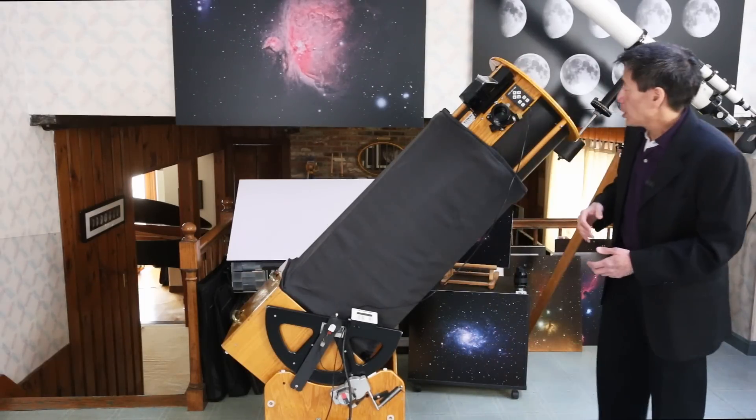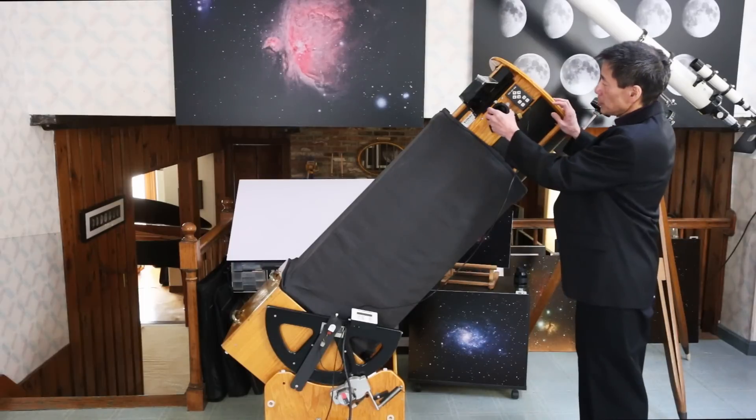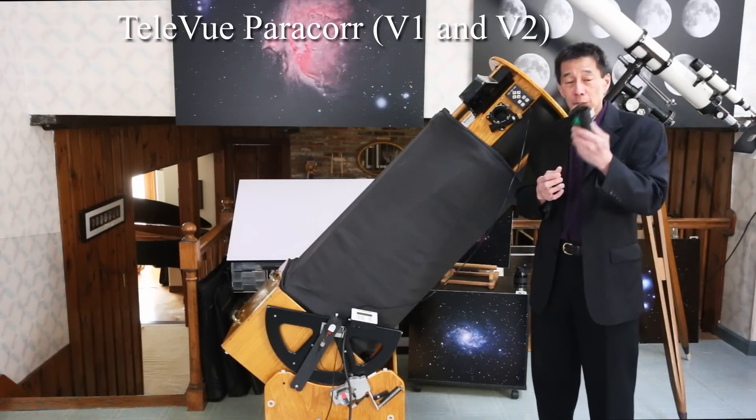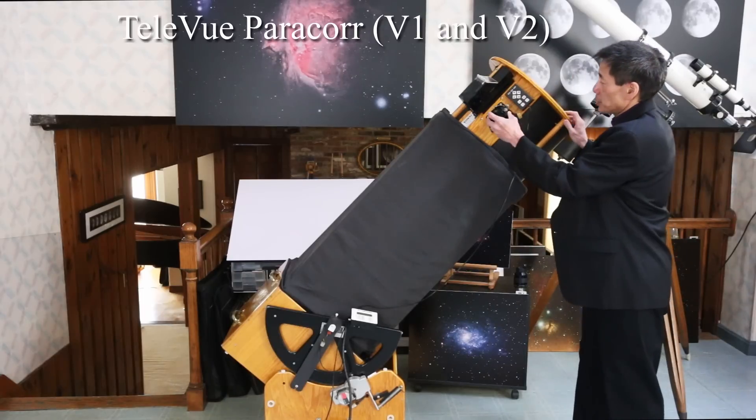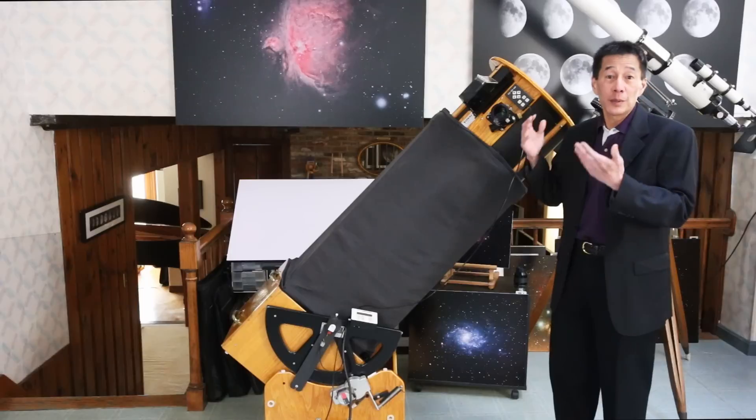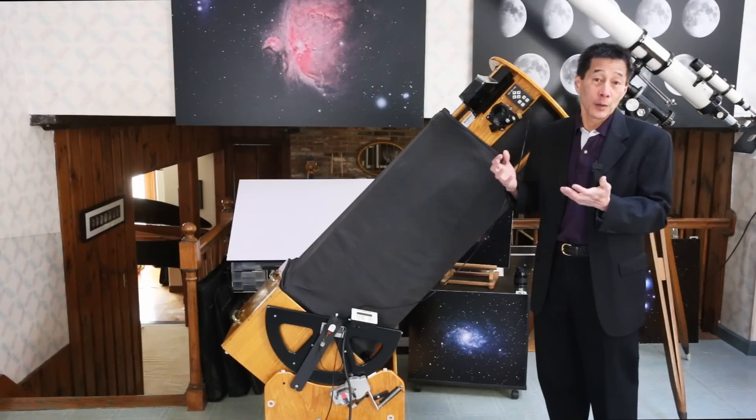But there's a fix that we have, and it's called a paracore, and this is made by Tele Vue. It looks kind of like an eyepiece. There's been a couple of different versions of this, but it slips right in the focuser here, and there's a lens element in there that corrects for these edge aberrations, and it works very, very well.